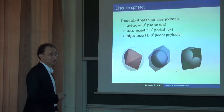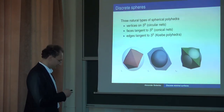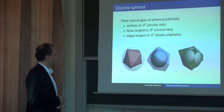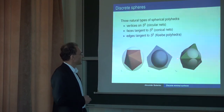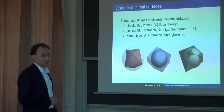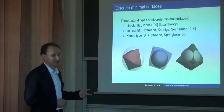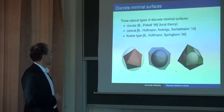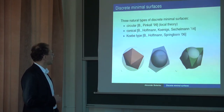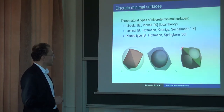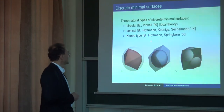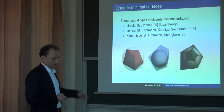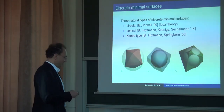There are three natural types of spherical polyhedra: the first case where vertices lie on the sphere, the second case where planes are tangent to the sphere, and an interesting third case where the edges are tangent to the sphere. It turns out that all three cases are interesting, all three lead to integrable systems and to minimal surfaces. There is an old paper about circular minimal surfaces, a paper about the Kerby type, and a new paper about conical minimal surfaces.